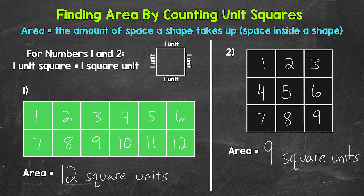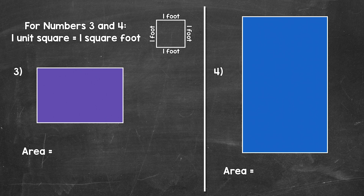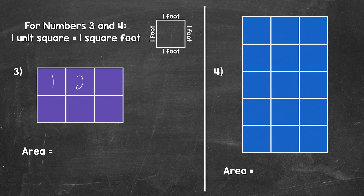Let's move on to numbers three and four. For these, each unit square equals one square foot. We can see our unit square at the top of the screen — each side measures one foot, so each unit square has an area of one square foot. That means we are measuring area in square feet. Now let's cover the shapes with unit squares. Looking at number three, we have one, two, three, four, five, six square feet. The area for number three equals six square feet.